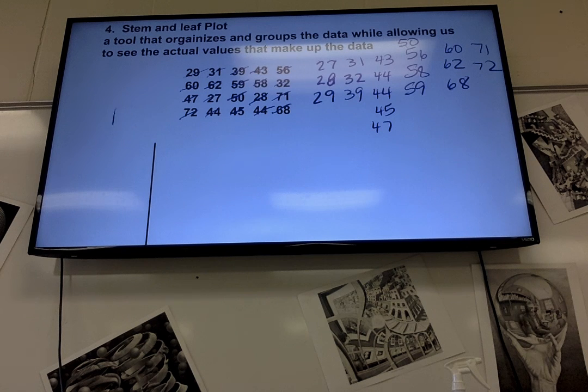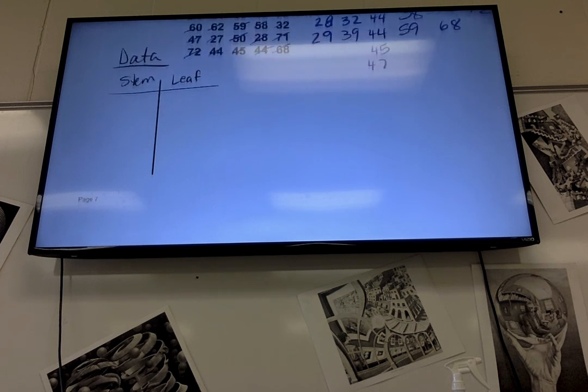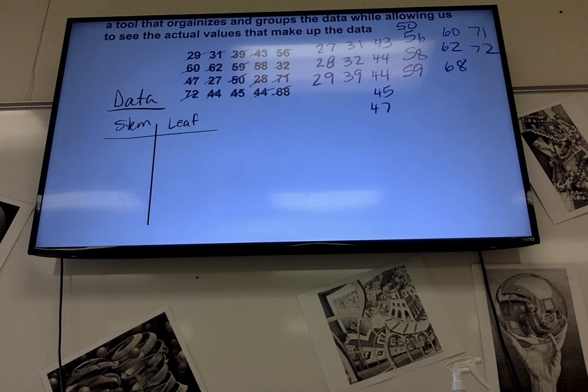Okay, so I need a title. Data. It has no title with it, so I just put data. The leaves are the numbers that go on the left of this chart here. And the stems go on the right. I said that backwards. Stems go on the left. Leaves go on the right.